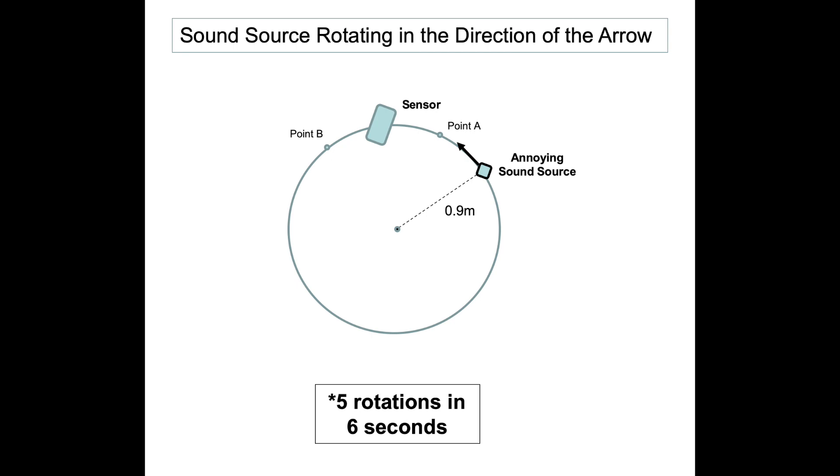Now plug it into your equation. And what you should see is your velocity equals 2 pi r, 2 times pi times 0.9 divided by 1.2. And oh my gosh, you guys should see something miraculous. It comes out to about 4.7 meters per second. Boom.